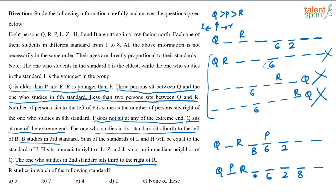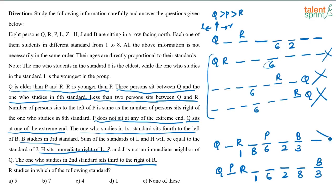Considering one case, can B be at certain positions? Checking each — if B is here, then 1st standard is 4 to the left; that position exists, so B is placed and 1st standard is fixed. For the other case, H is to the immediate right of L. Checking if there are two adjacent vacant places — not possible in that sub-case, so that arrangement is wrong. In the remaining valid case, there are adjacent vacant spots where L and H can be placed.